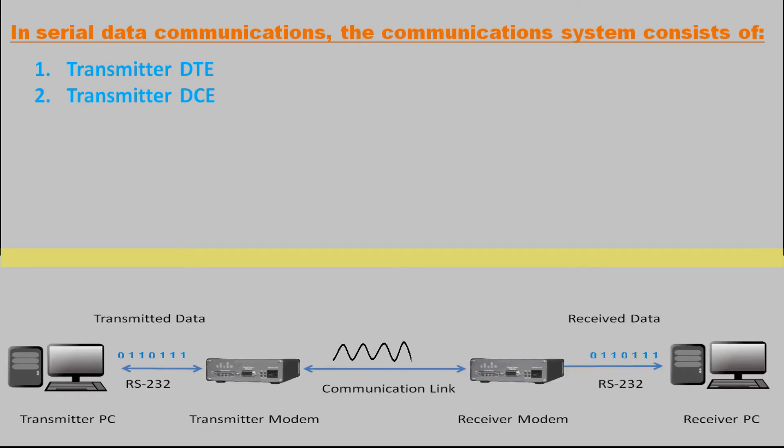Second, transmitter DCE data communication equipment. It acts as a data converter such as a modem to convert the signal into a form suitable for the communication link. For example, analog signals for the telephone system if our communication link is telephone line.